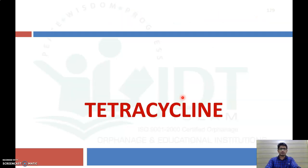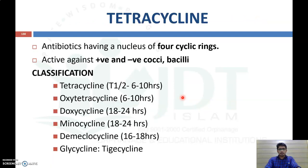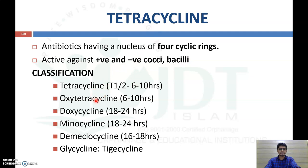Now let's start with tetracycline. As the name indicates, these are antibiotics which have a nucleus of four cyclic rings. They are broad spectrum antibiotics, active against both gram positive and gram negative cocci as well as bacillus type of microorganisms.